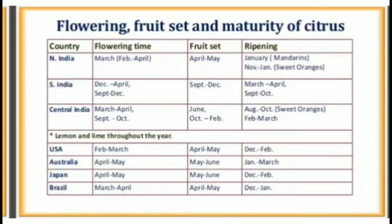Flowering, fruit set and maturity of citrus by region: North India — flowering February to April, fruit set April to May, ripening January for mandarins and November to January for sweet oranges. South India — flowering December to April and September to December, fruit set September to December, ripening March to April and September to October. Central India — flowering March to April and September to October, fruit set June and October to February, ripening August to October for sweet oranges and February to March; lemon and lime throughout the year. USA — February to March. Australia — April to May. Japan — April to May. Brazil — March to April.